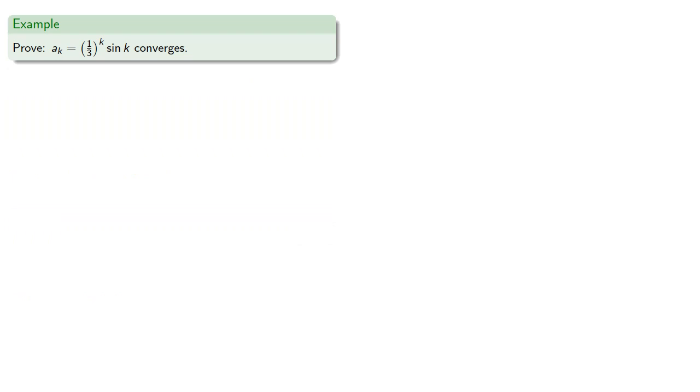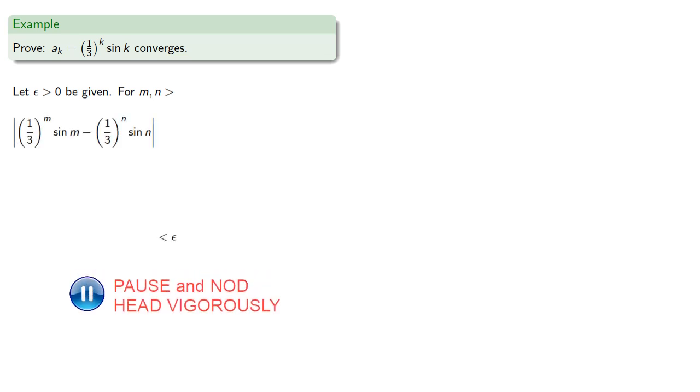So let's prove that this sequence converges. So let epsilon greater than zero be given. For m and n greater than, well I don't know what, we'll figure that out as we go. We want the difference to be less than epsilon. Now we know what our destination is, so let's fill in the roadmap.